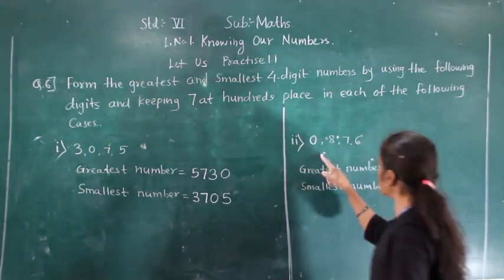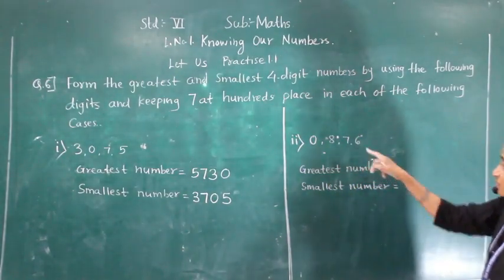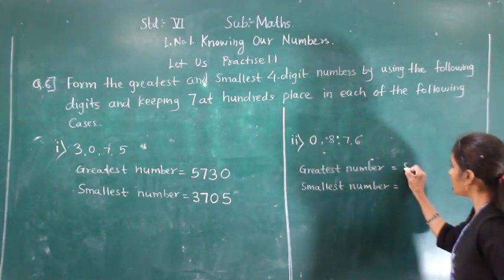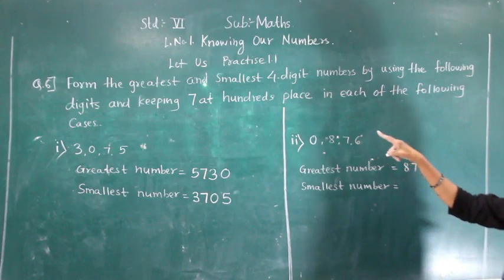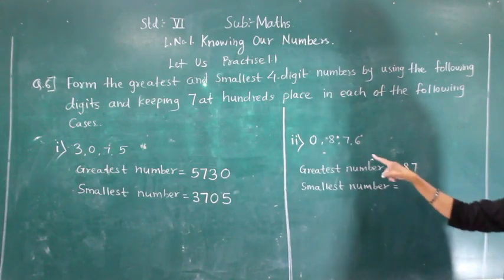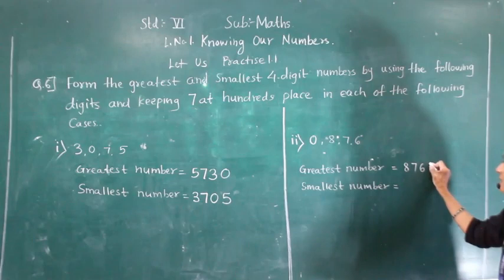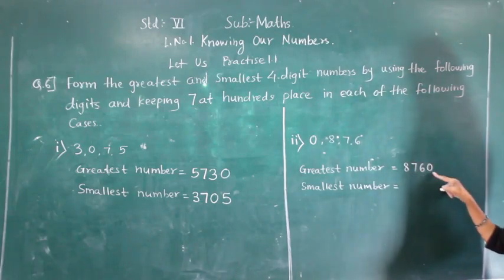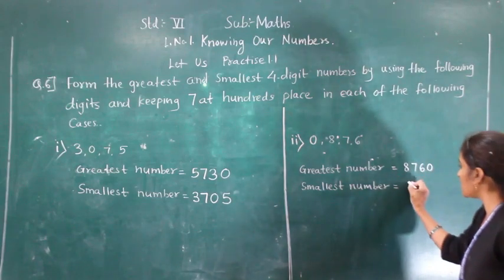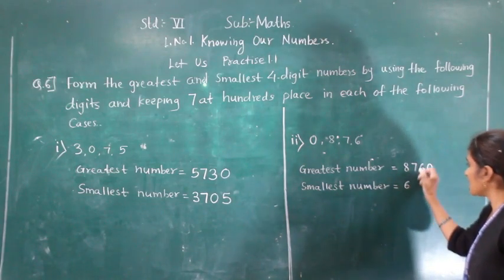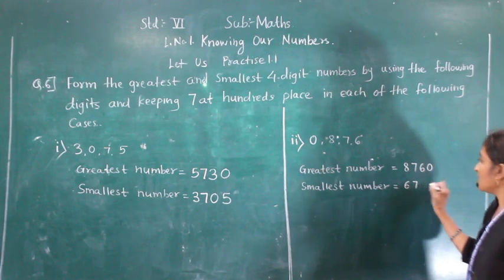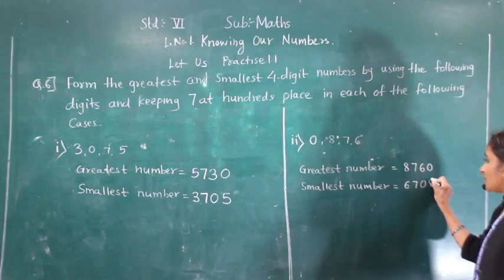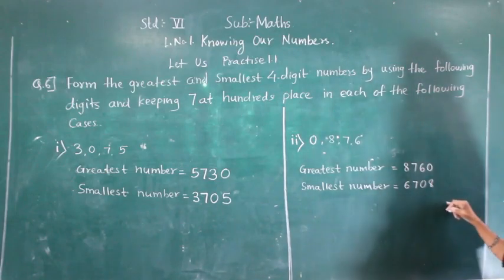Next case with digits 0, 8, 7, 6: except 7, the greatest digit is 8, then we write 7 at hundreds place as per the given condition, then 6 and 0 — so 8760 is the greatest number. For the smallest number, we write 6, then 7, then 0 and 8, giving us 6708 as the smallest number.